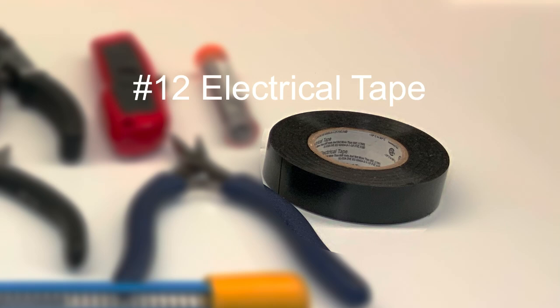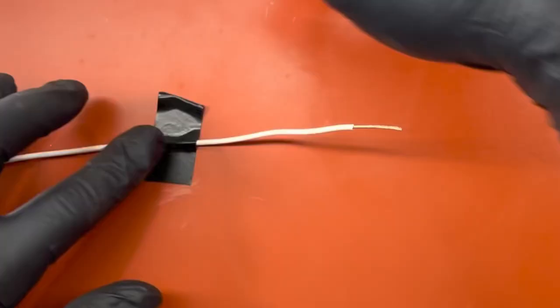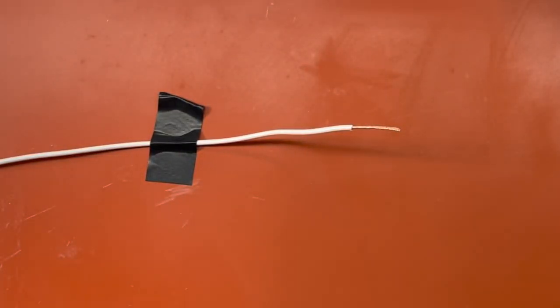Number twelve, electrical tape. Besides using this to insulate exposed wire, you can use this also to temporarily hold items into position.